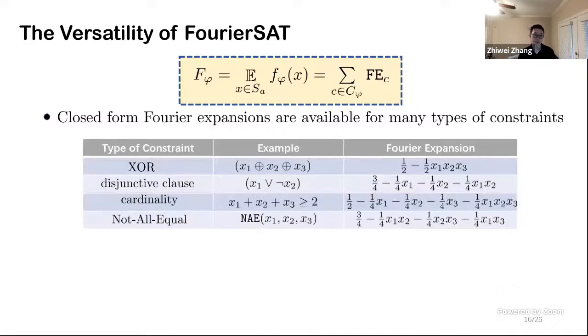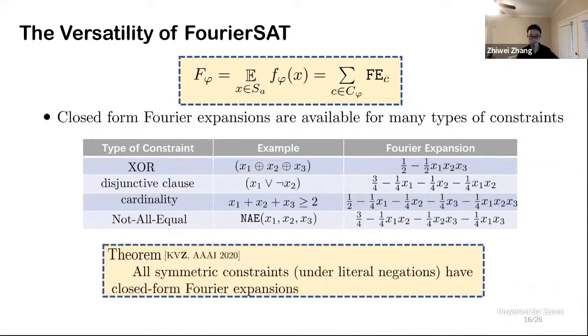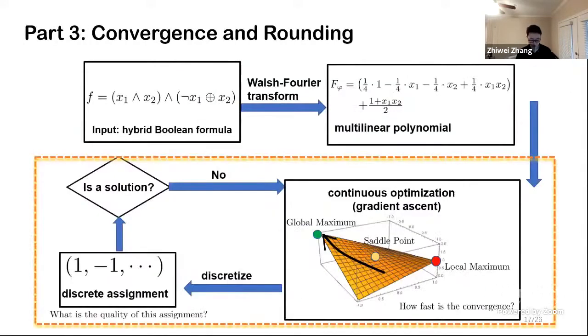For what type of constraint can we do it? Fortunately, many types of interesting constraints have their closed form Fourier expansions from XOR to cardinality constraints to not all equal constraints and they including CNF clauses. We further proved that for all symmetric constraints, we have their closed form Fourier expansions.